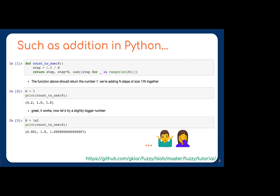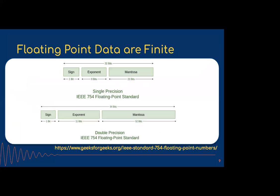The reason is that floating point data is finite. In decimal, 0.1 is a repeating decimal, and the structure of floating point values — floats and doubles — means that when doing floating point arithmetic you will be inexact, just because of the limitations of data structures and the fact that computers are finite machines.